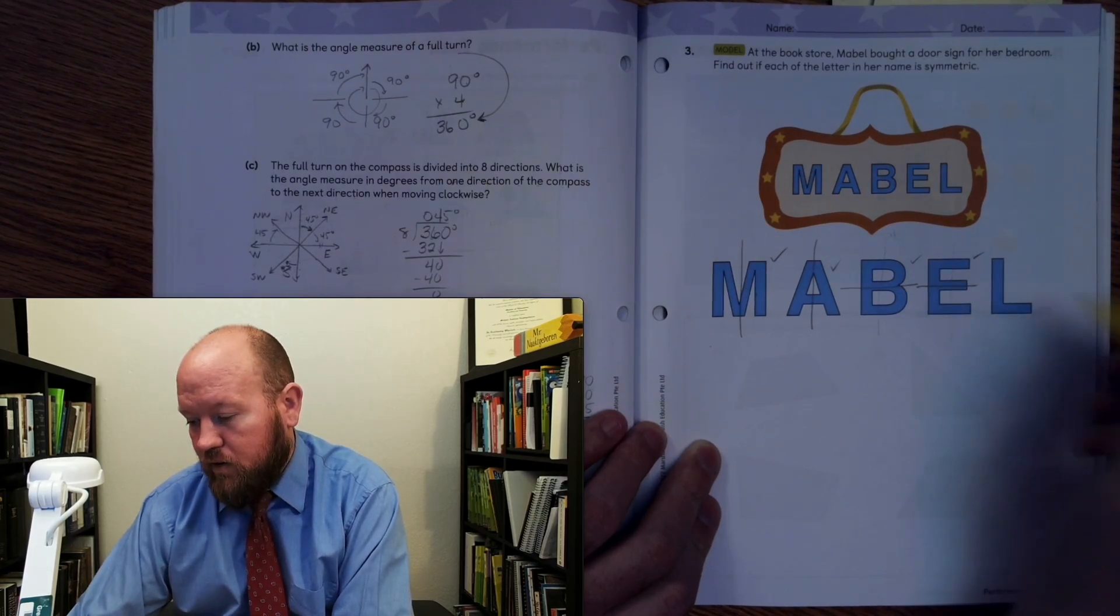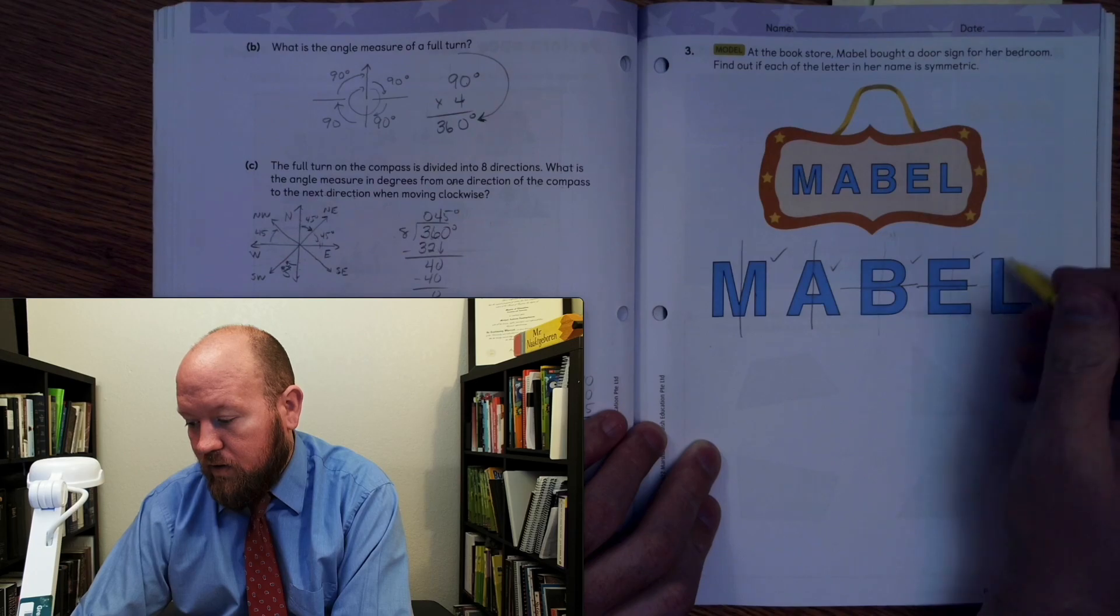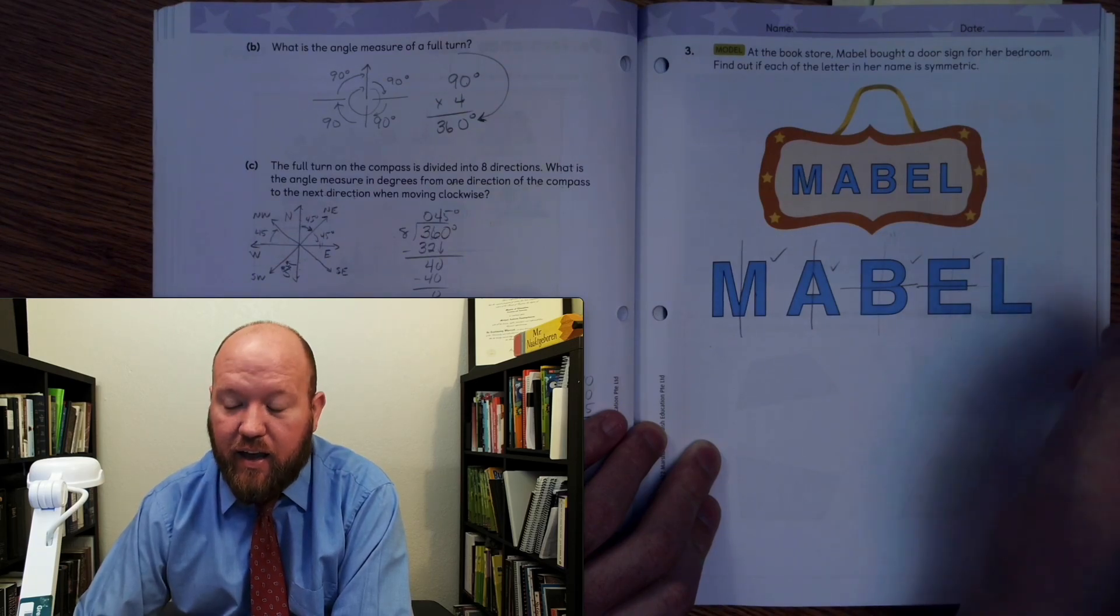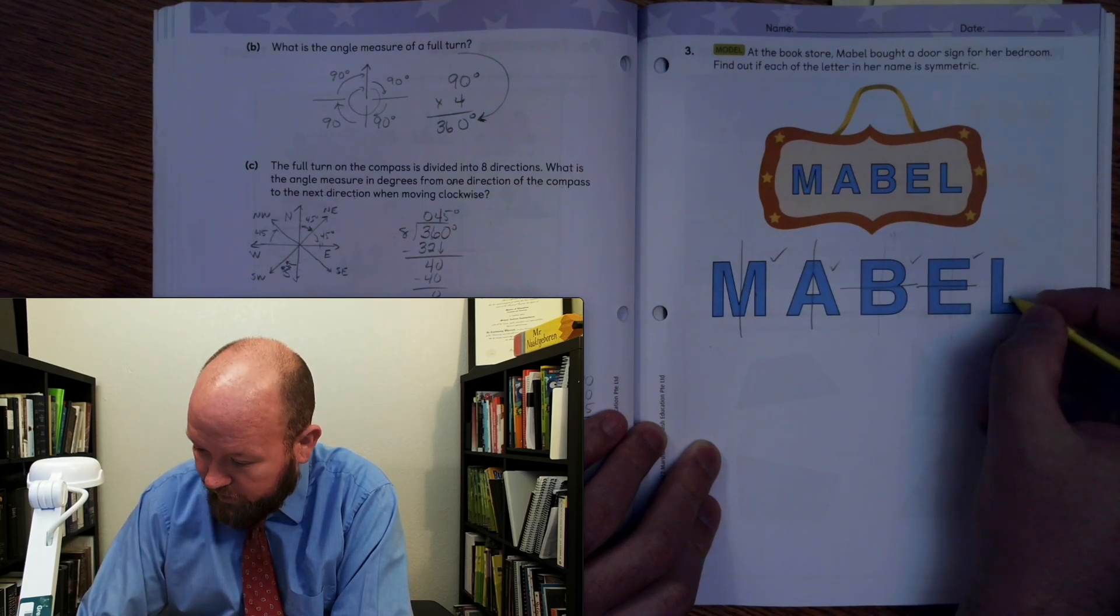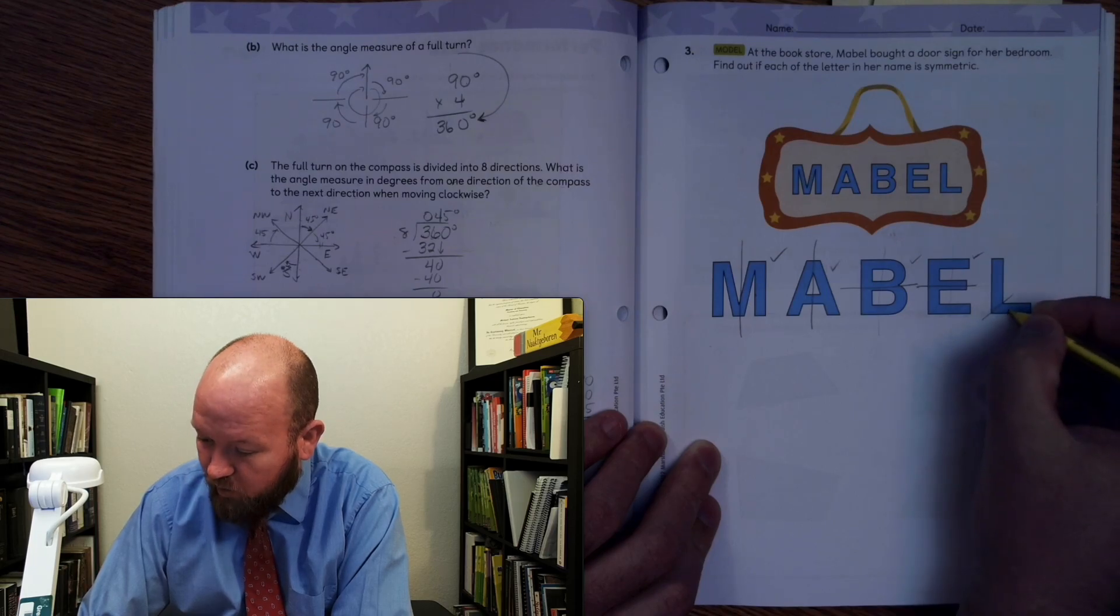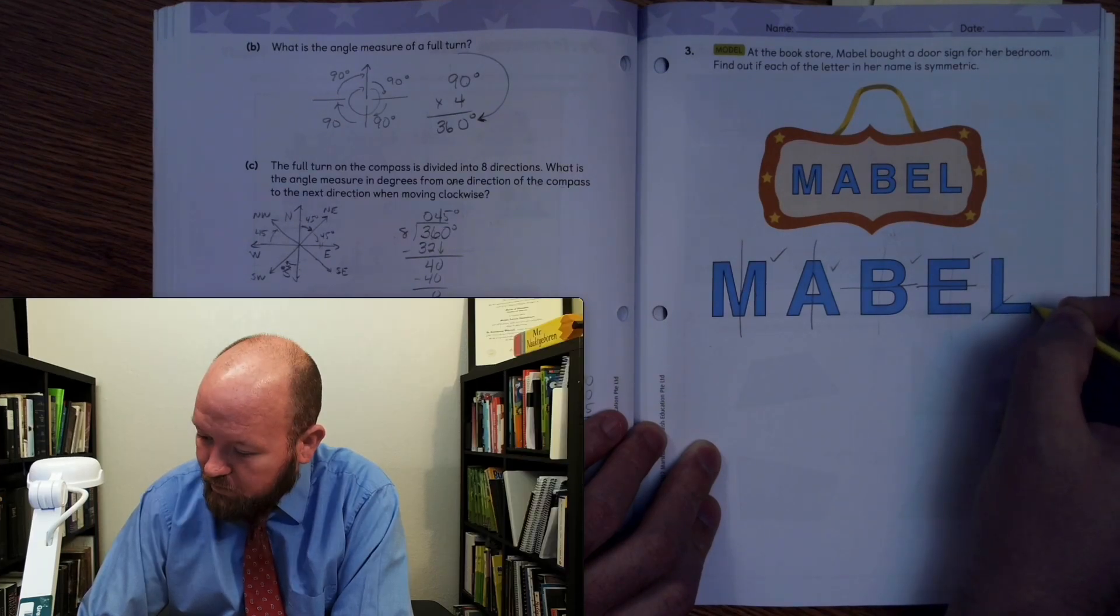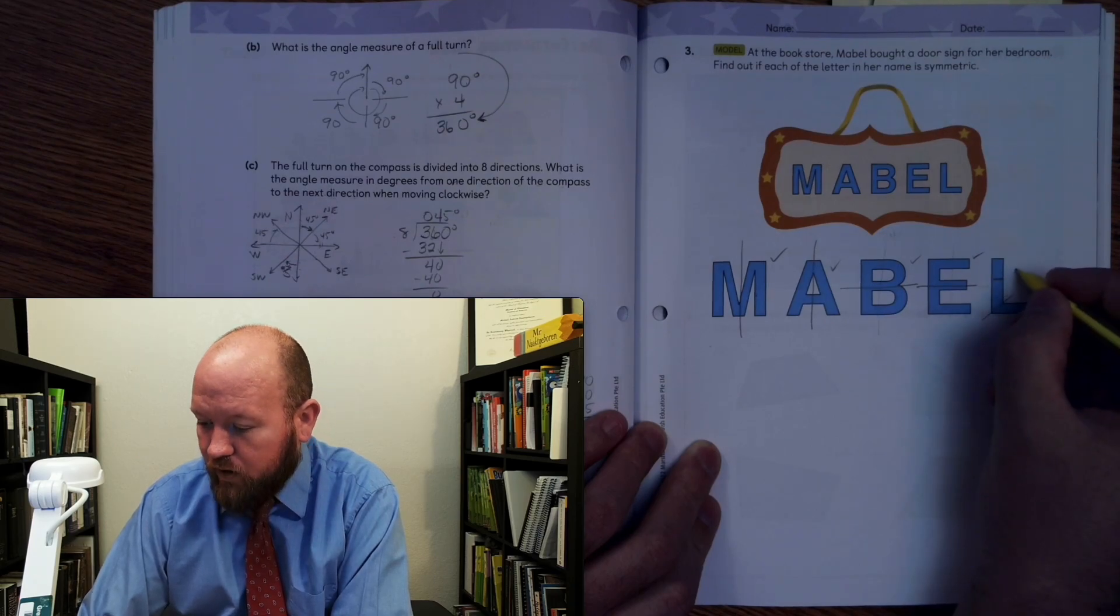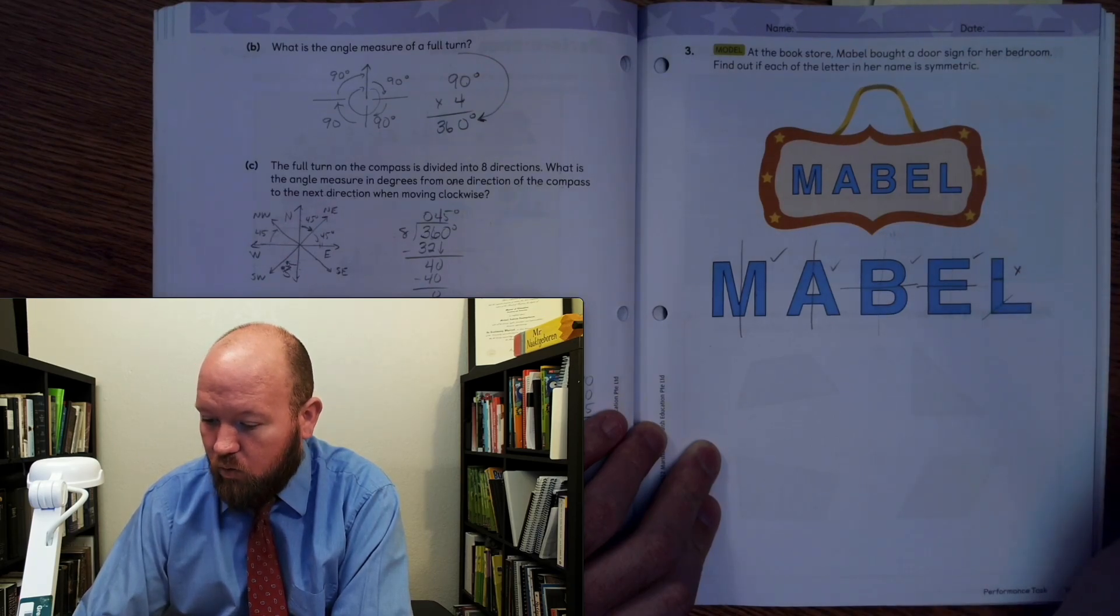What about the L? So I can't divide it here. Can't divide it here. Interestingly enough, I could divide it here and that would fold up perfectly. But this bar down here is a little bit short. So it only comes like right there. So no, the L does not work.